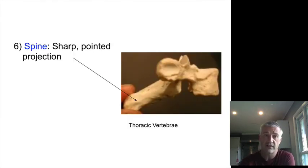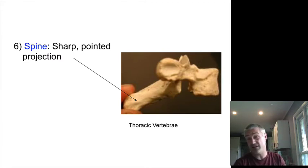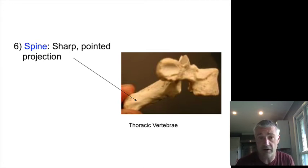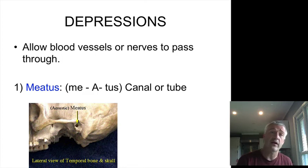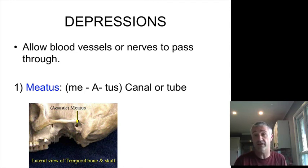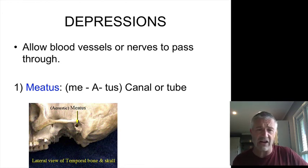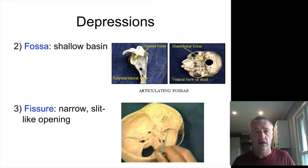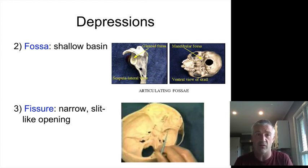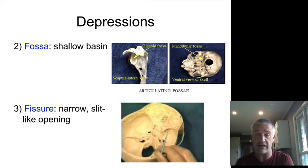A spine is a pointed projection — like the spinous process you would see on the vertebrae. Moving to depressions, these are lower areas in the bone — flat surfaces, holes, or openings through the bone. A meatus is a canal or tube, generally air-filled. For example, the external auditory meatus. A fossa is a shallow basin or canyon in the bone — I always joke that fossa died in a canyon. Examples include the glenoid fossa or the mandibular fossa.